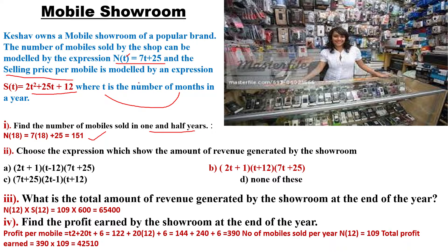The number of mobiles n(t) = t + 25, and the selling price per mobile s(t) = 2t² + 25t + 12. When you multiply this polynomial with (t + 25), it will be (2t + 1)(t + 12)(t + 25), because the factorization of this polynomial is (2t + 1)(t + 12). So this is the amount of revenue generated by the showroom.